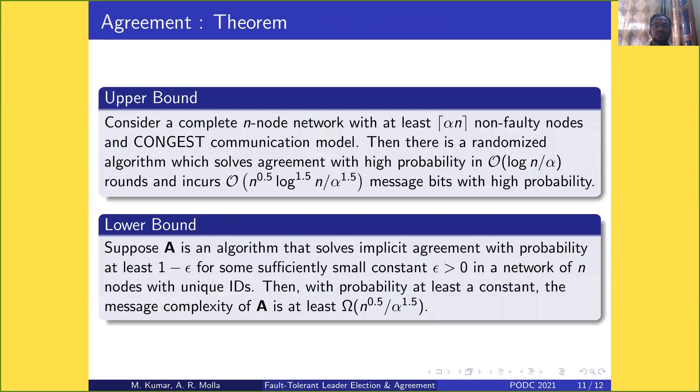For agreement, we have upper and lower bounds. For the given model, there is a randomized algorithm which solves agreement with high probability in O(log(n) / α) rounds and O(n^0.5 * log^1.5(n) / α^1.5) messages with high probability.